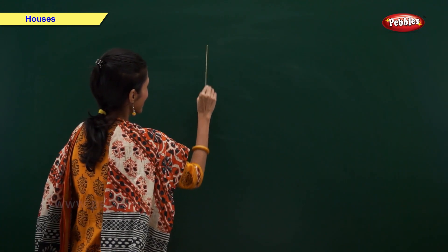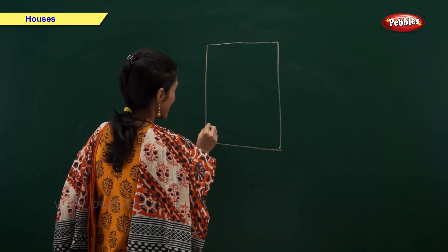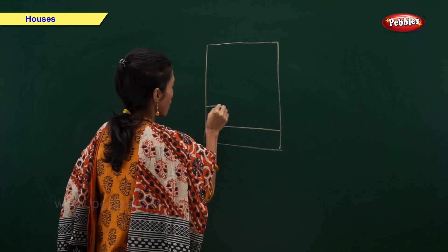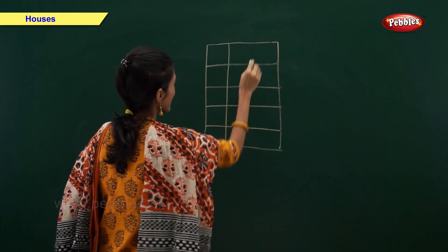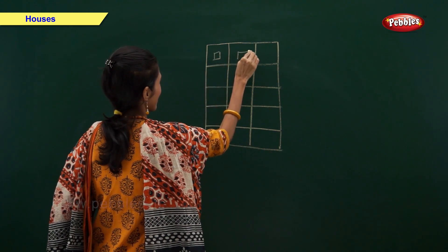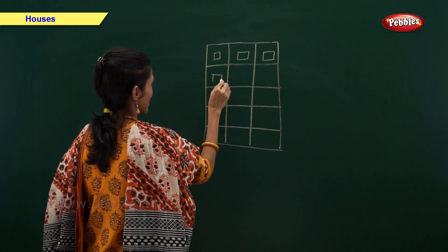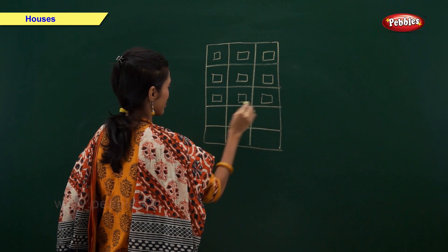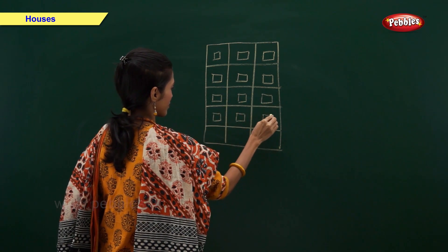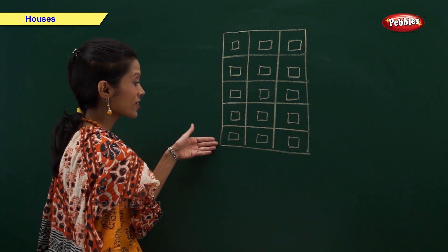Now friends, shall we draw a building? Will you all help me? This is a building. In this picture, each floor is having three flats. So, our building has many floors and many flats.